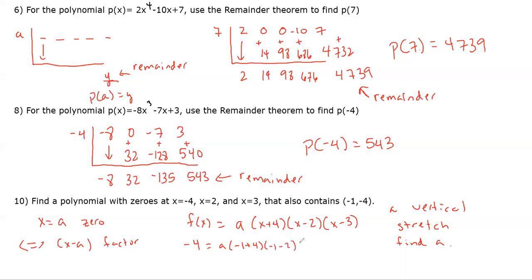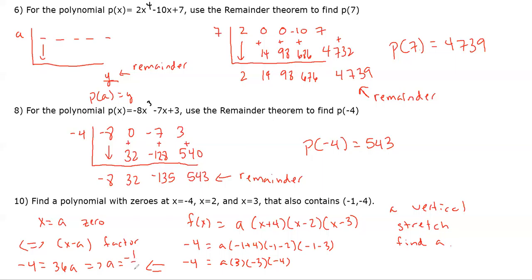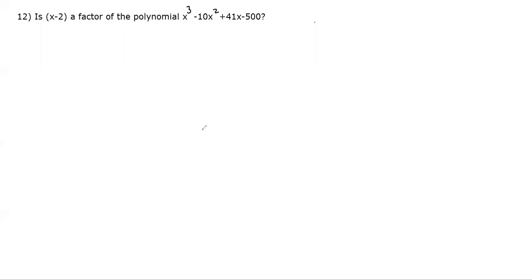To find a, plug in (−1, −4): −4 = a(−1 + 4)(−1 − 2)(−1 − 3) = a(3)(−3)(−4) = 36a. So a = −1/9. The final answer is f(x) = −(1/9)(x + 4)(x − 2)(x − 3).